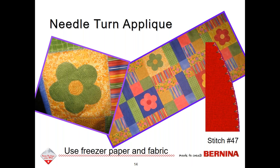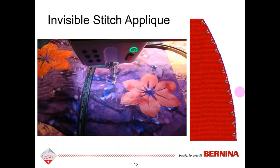With needle turn applique, you use freezer paper and turn under the raw edge of your fabric. In this project, both the freezer paper and the fabric pieces were cut out with the Cutwork tool, then stitched down with stitch number 47 in the software using invisible thread so it looked hand stitched — this is a turned under edge, not a raw edge. With invisible stitch applique, you can use that same stitch but working with a raw edge and invisible thread.